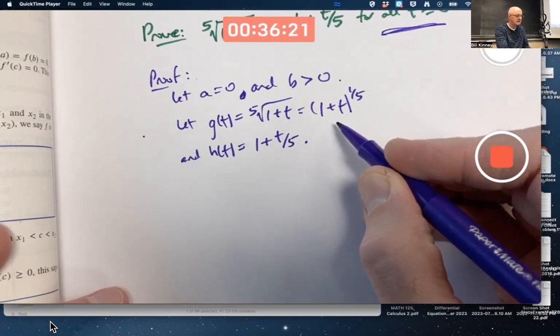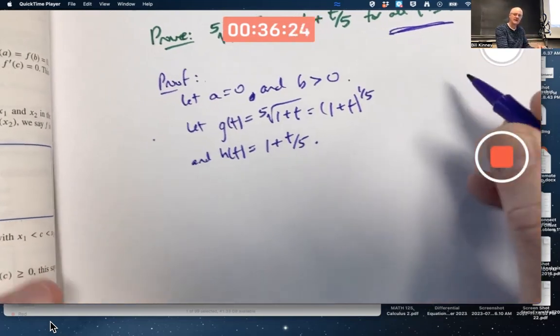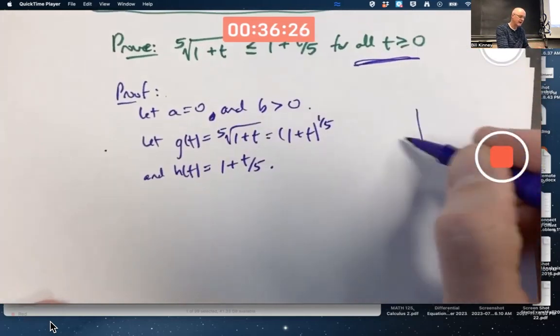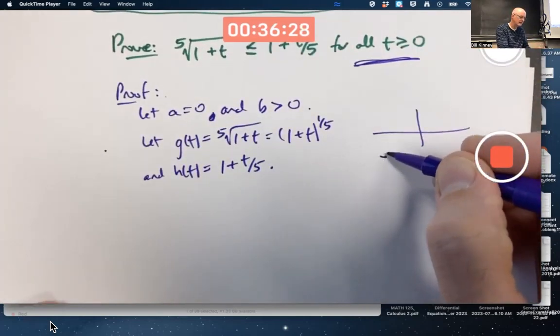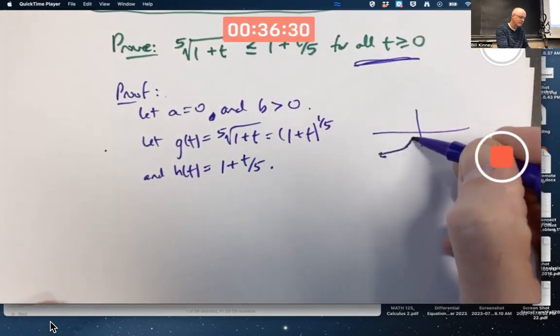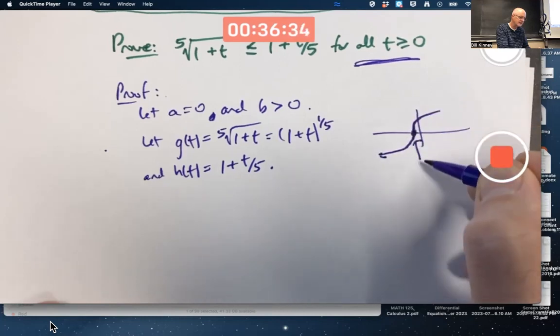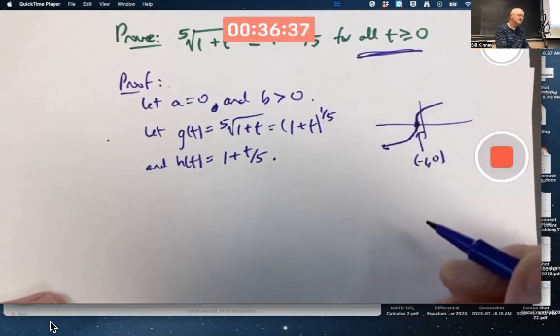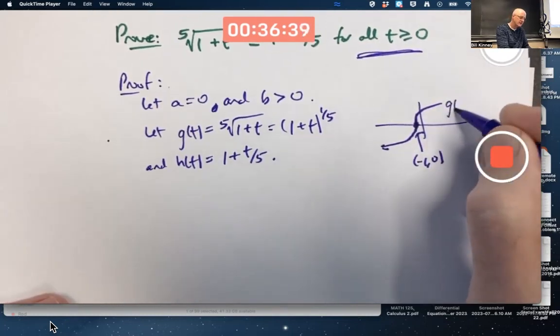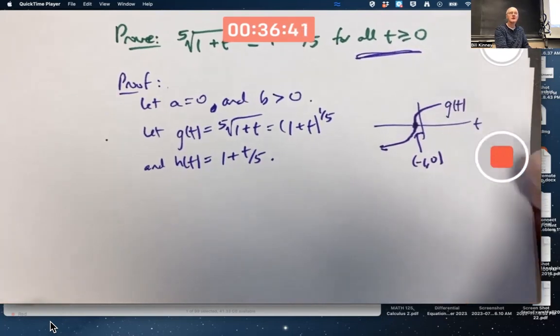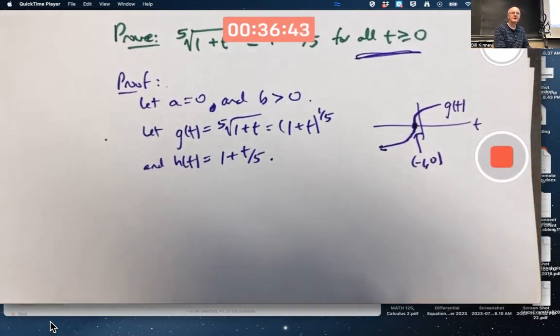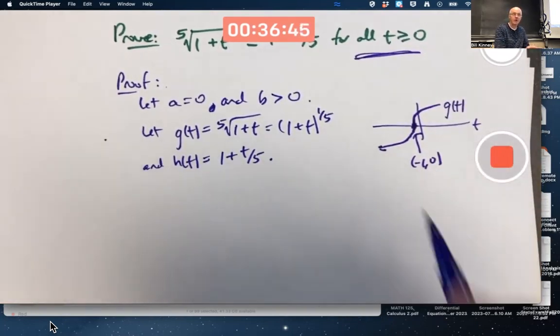It's actually continuous everywhere but fails to be differentiable at negative one. Its graph, if you graph it over the entire real number line, looks about like this - it's got a vertical tangent at this point. That point is (-1, 0). That's the graph of g(t). But we're only concerned about when t is greater than zero, so we don't have to worry about that part.